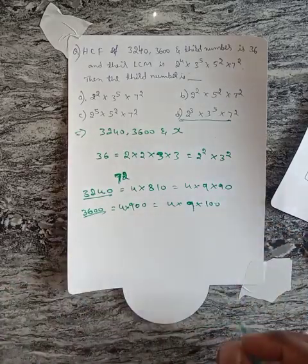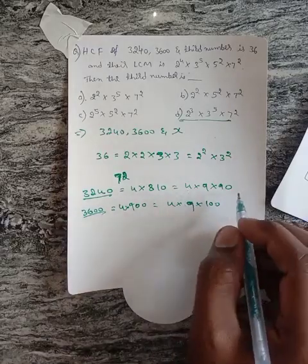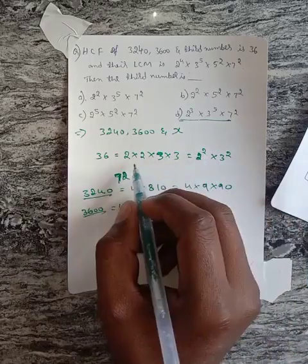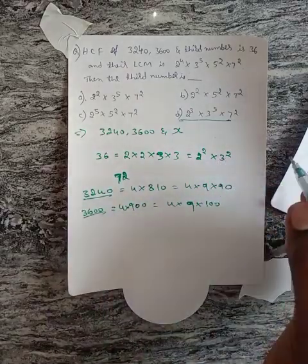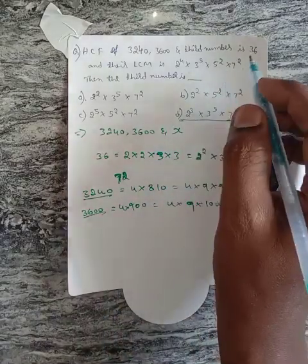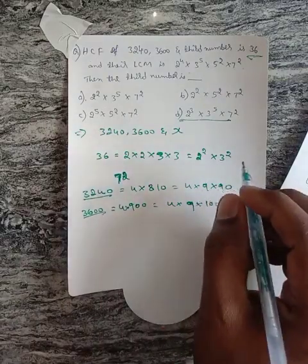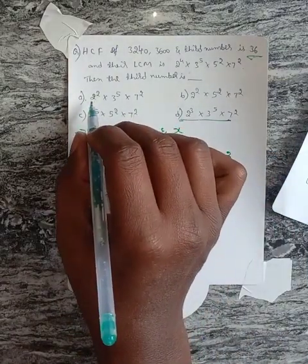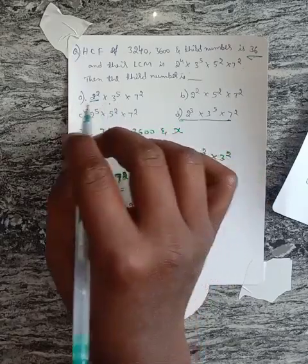Here we see 2^2. In order to make the HCF 36, we have to choose a number that contains only 2^2 and 3^2.